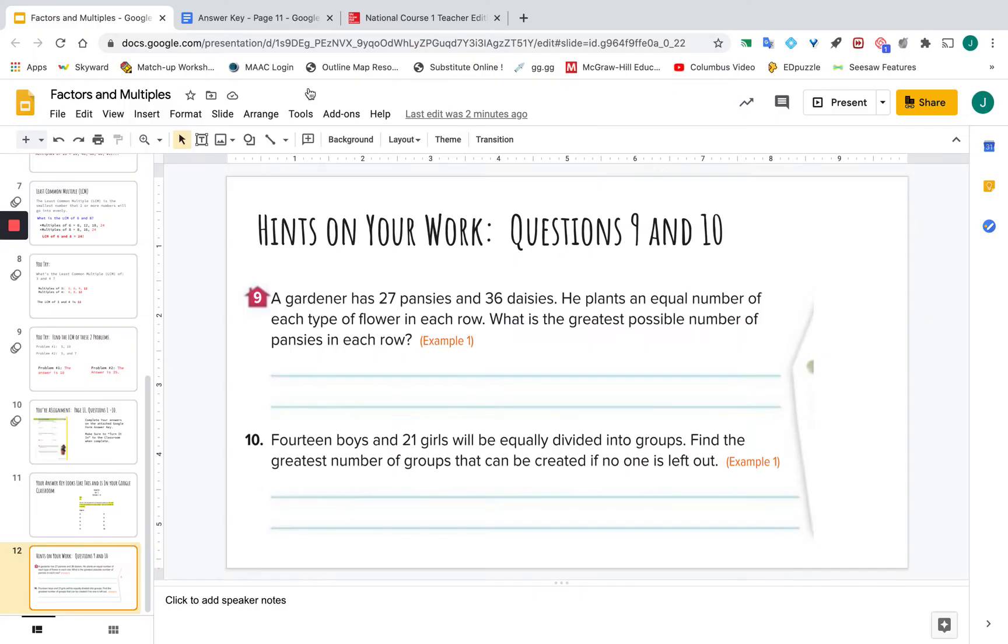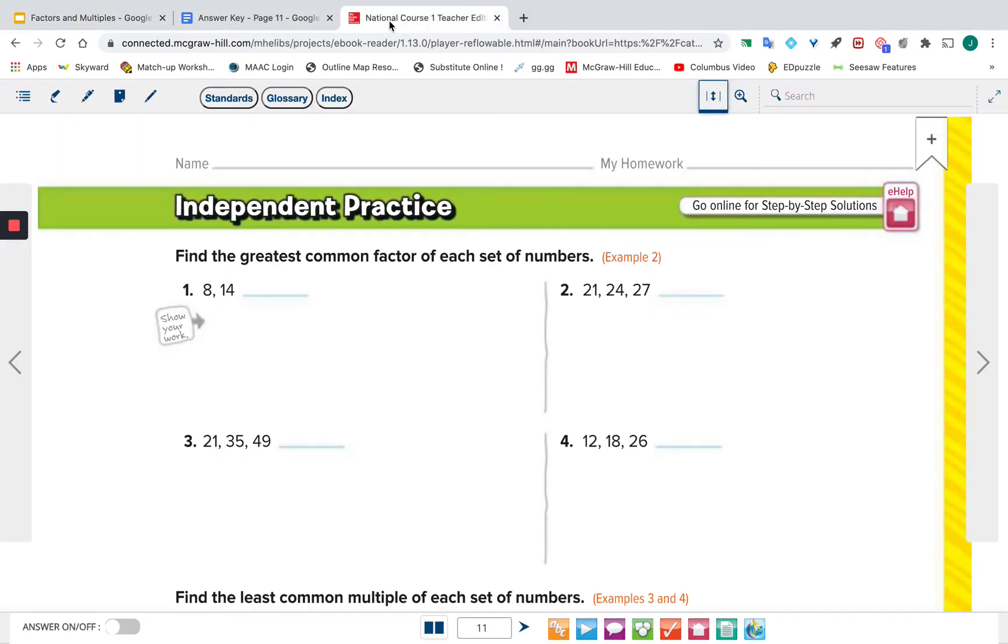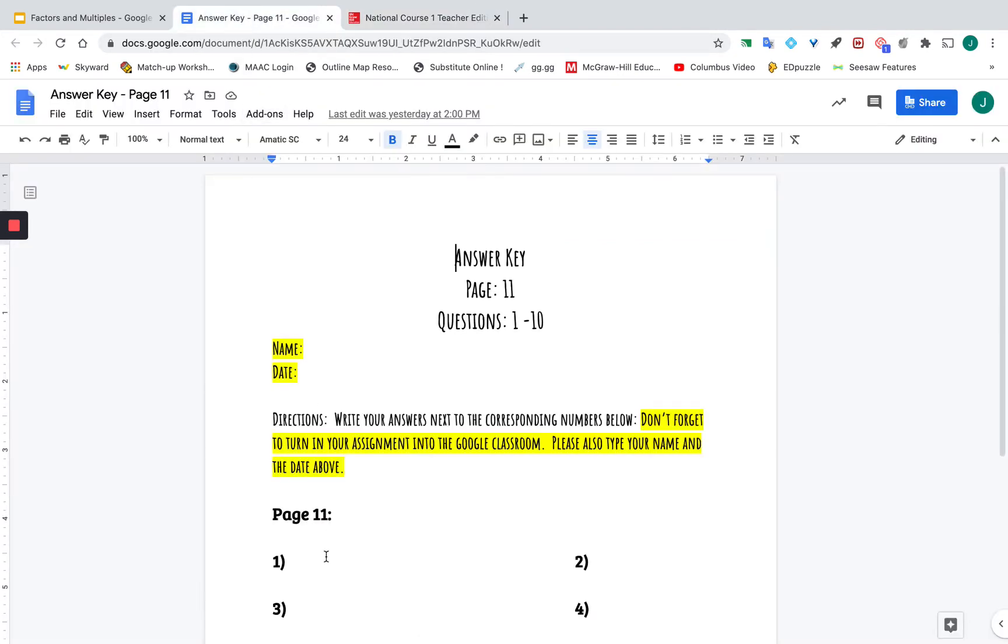Here's your assignment. Page eleven. If you're looking for the greatest common factor, again, that's a number that's going to go into both eight and fourteen in an even amount of times. I'll give you the answer to number one. It's two. Now, obviously, you can't show your work on an answer key, but you can at least show me that you're getting the concept. So you go back to your answer key. And for number one, you type in two. When you're done, you're going to turn this in.